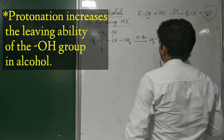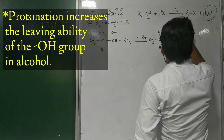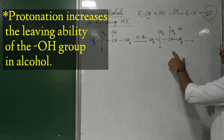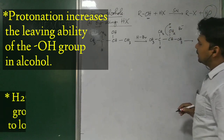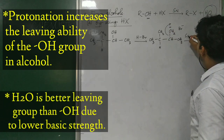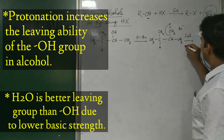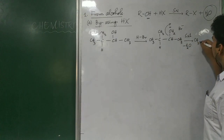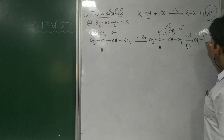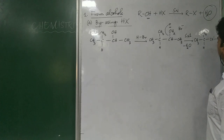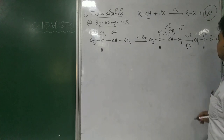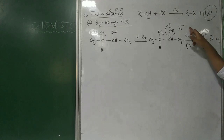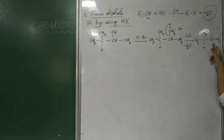Then you will get the protonated alcohol. This is our protonated alcohol, and Br⁻ can be present here. Next, after protonation, this leaving group that has been protonated gets released — this is in accordance with SN1 mechanism. After the release of the leaving group, you will get your carbocation intermediate.